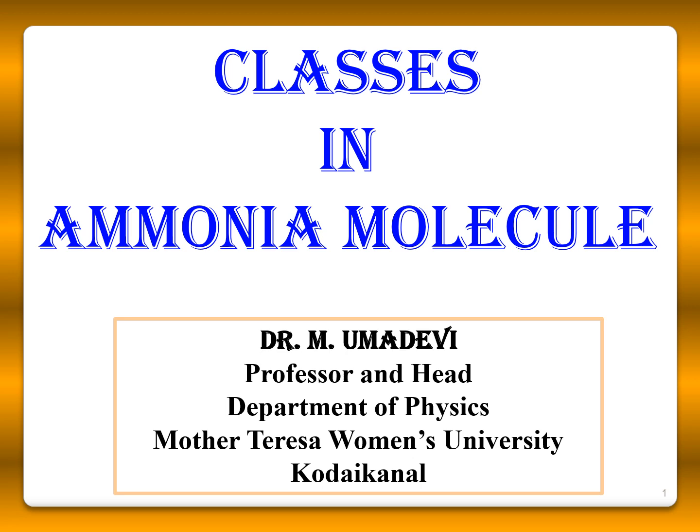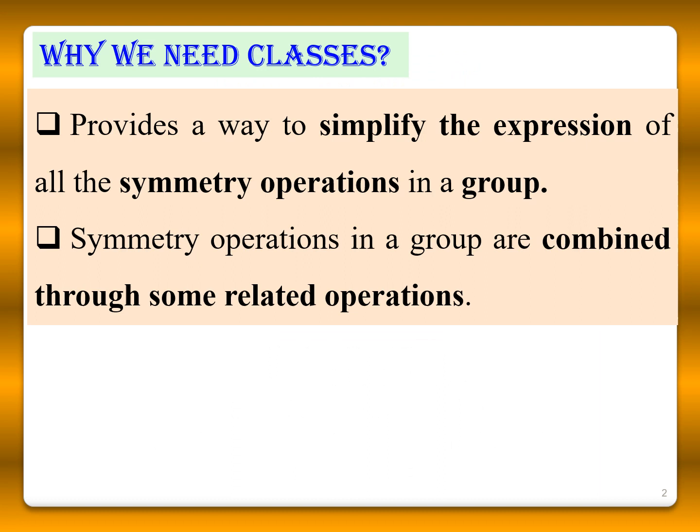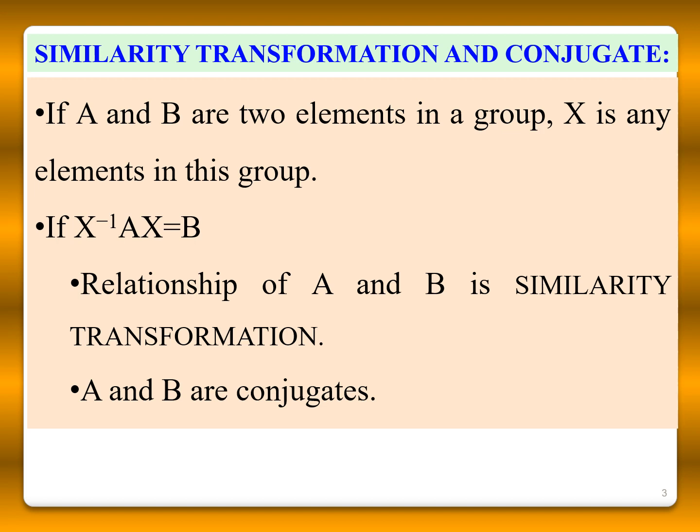Now, we will see how to find the classes in ammonia molecules. It will provide a way to simplify the expression of all the symmetry operations in a group. The symmetry operations of a group are combined through some related operations in the class. So, before going to the class, we will see about similarity transformation and conjugate.